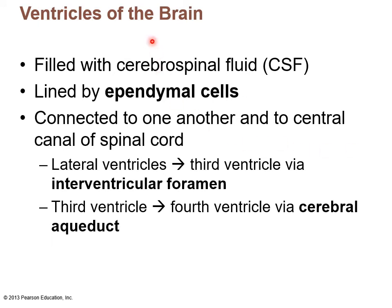The ventricles are open areas where cerebrospinal fluid circulates. They are lined by neuroglial cells called ependymal cells, which have cilia that keep the CSF flowing in one direction. These ventricles are connected to one another and to the central canal of the spinal cord. The lateral ventricles drain into the third ventricle via the interventricular foramina — small openings that allow fluid to flow into the third ventricle. Then, from the third ventricle to the fourth ventricle, there is a canal called the cerebral aqueduct that connects these two together.